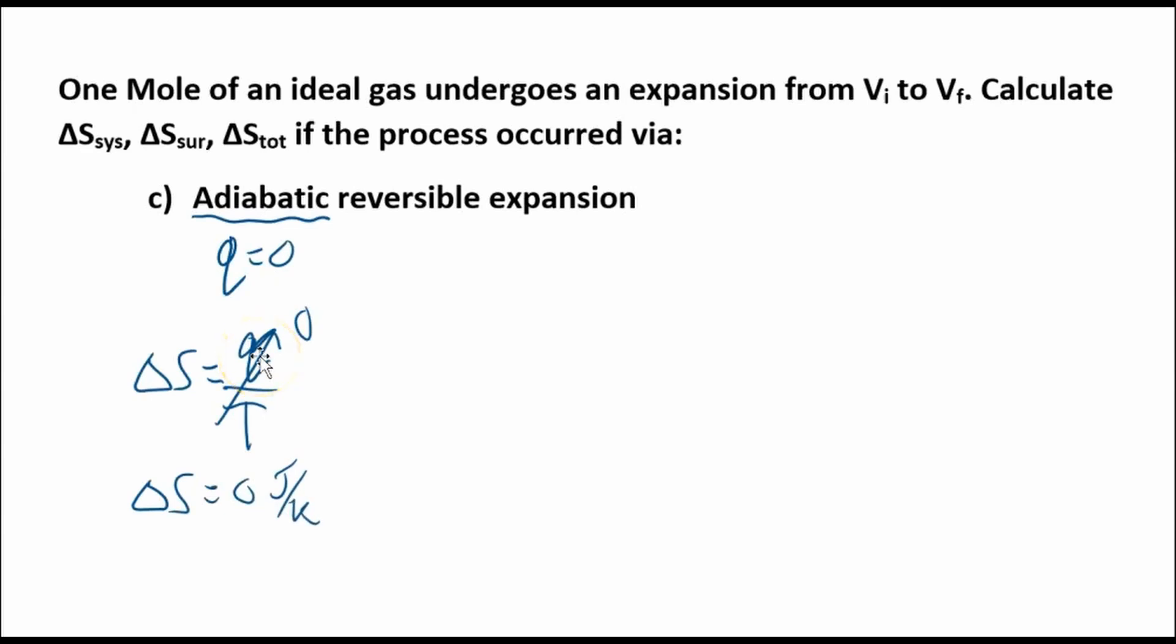There's no heat transferred to or from the system. That means there's no heat transfer with the surroundings as well, so the change in entropy of the surroundings has to be zero because Q is zero. And the change in entropy total is the change in entropy of the system plus the change in entropy of the surroundings. All of those are zero, so the total change in entropy is zero as well.